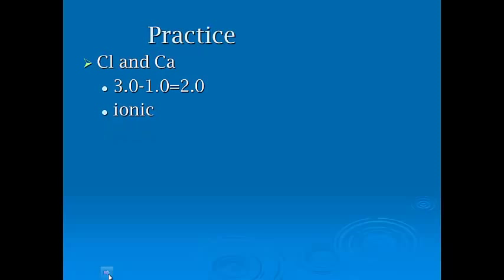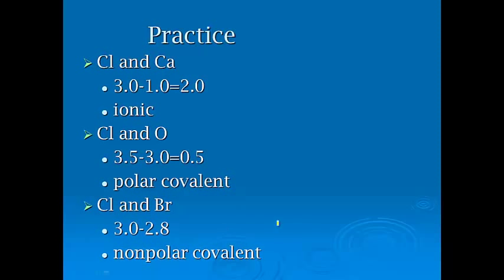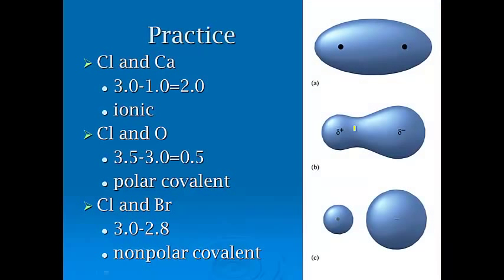A couple more examples. Between chlorine and calcium, it's an ionic. Between chlorine and oxygen, it's going to be polar covalent. Between chlorine and bromine, it's less than 0.3, so it's nonpolar covalent. Here's that picture. Up here you've got the non, here you've got polar, and here you've got ionic.